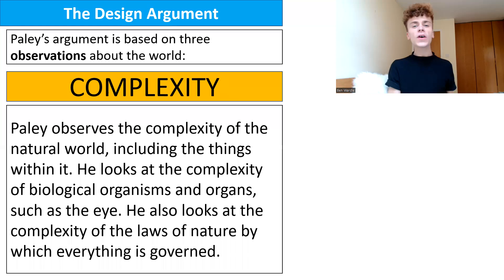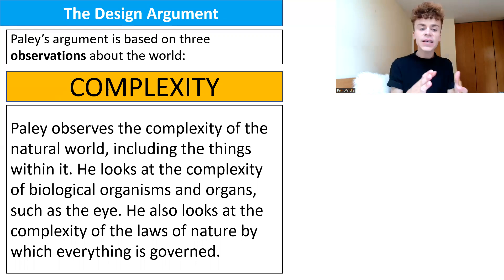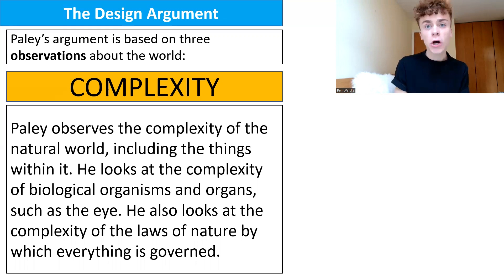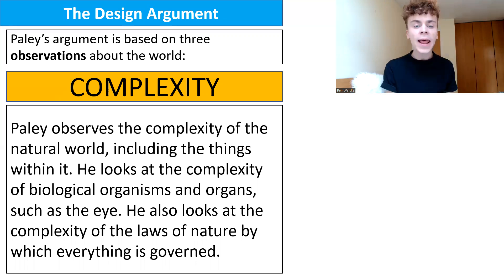The first observation is complexity. Paley observes the complexity of the natural world, including things within it. He looks at the complexity of biological organisms and organs, such as the eye, and also the complexity of the laws of nature by which everything is governed. His first observation in his empirical argument is the complexity of the natural world.